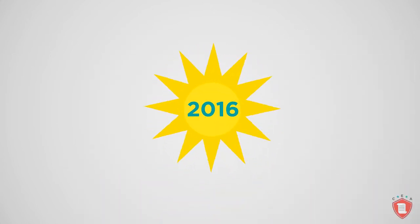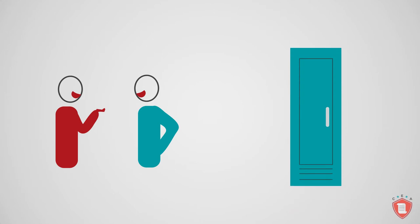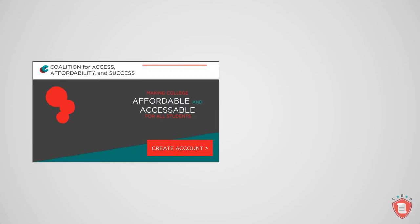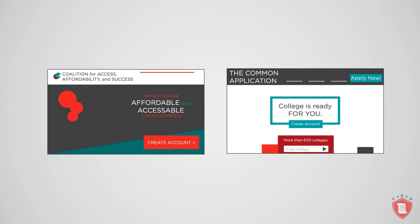The Coalition announced plans to launch their Common App competitor in the summer of 2016. The resulting platform includes interesting features like a collaboration hub and a locker that allows students to store essays and assignments they are considering for submission. Most schools offering the Coalition app as an option will also allow students to apply via the Common App. With that in mind, how will this new platform affect the challenging but rewarding task of writing a winning college admissions essay?